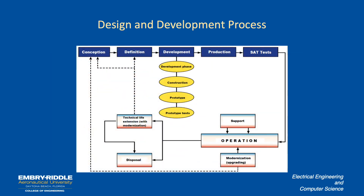Here's another view with more detail on the development part. You have a conception phase, then a definition phase with feedback loops. Previous engineering has been employed — for example, technical life extension for aircraft like the B-52. In development, there are construction, prototypes, and prototype testing before production. During production there's factory acceptance testing (FAT), and once deployed, site acceptance testing (SAT). While in operation, upgrades are possible, and ultimately aircraft either receive technical life extension or are decommissioned.